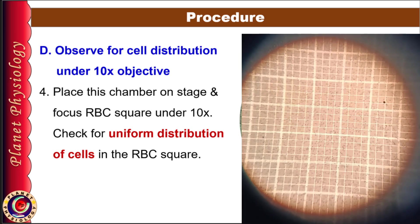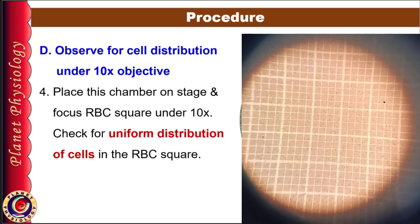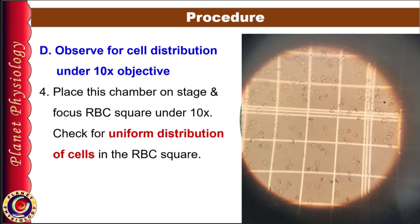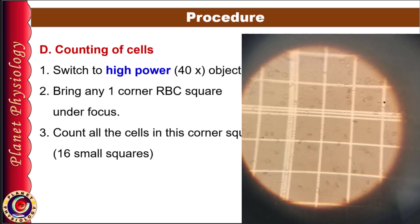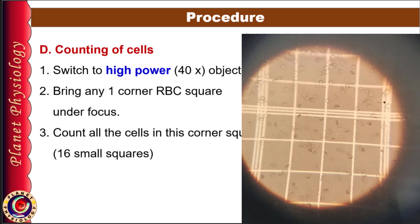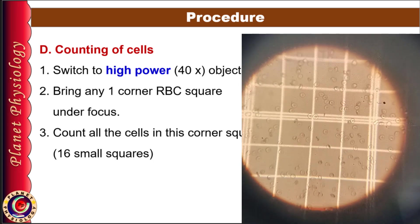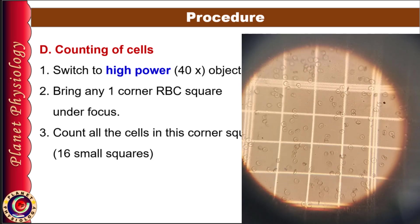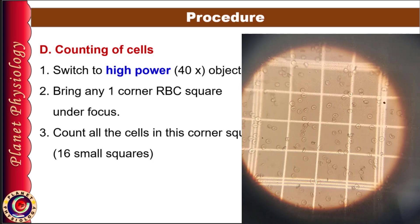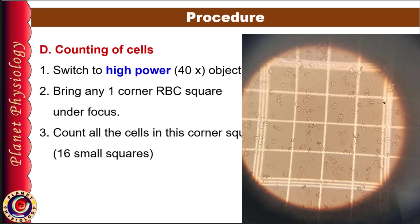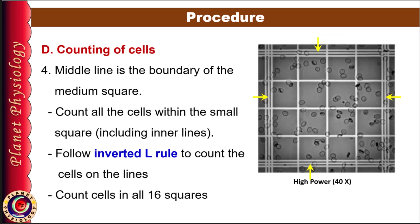Once it is done, observe the distribution of cells in the entire RBC square. If the cells are evenly distributed, switch to high power objective and do fine adjustment to clearly focus the squares. Move the stage to focus any one medium-sized corner RBC square. Note that medium RBC squares are bounded by triple lines and have 16 small squares within them. Out of these triple lines, the middle line is the actual boundary of the medium square.